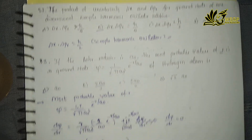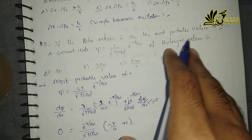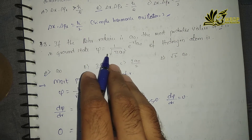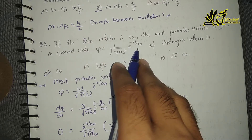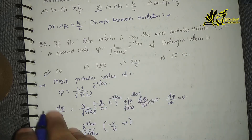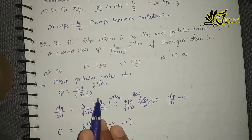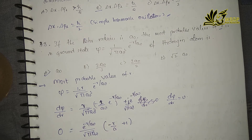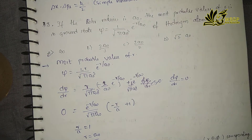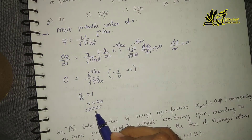Let's go for question number 38. If the Bohr radius is a₀, the most probable value of r in the ground state — what we have to do is differentiate with respect to r, set dψ/dr = 0, and you will end up with r = a₀.